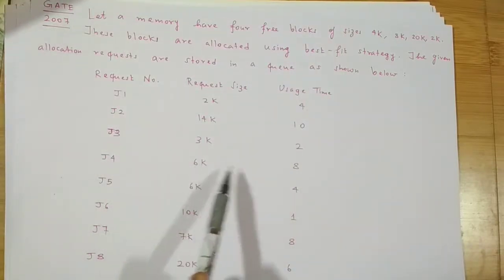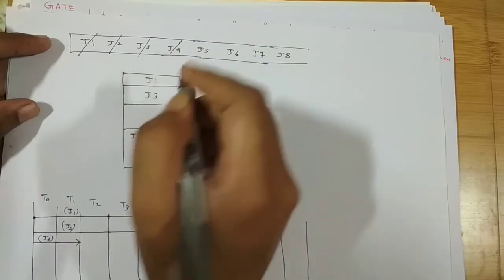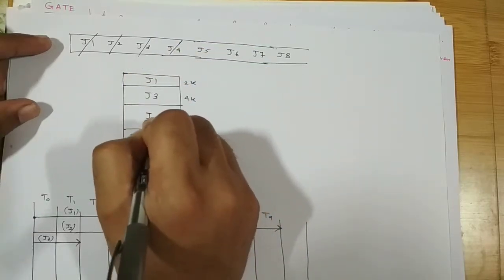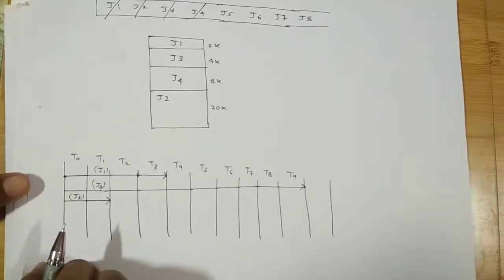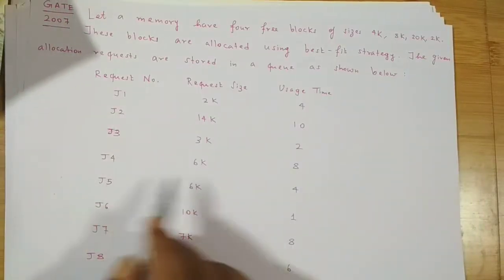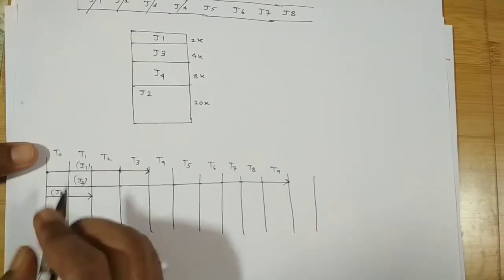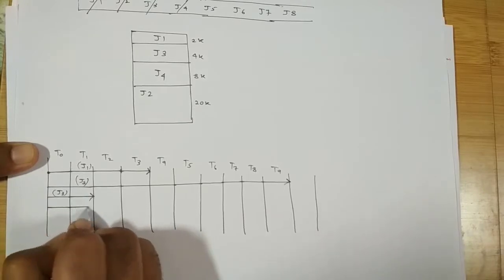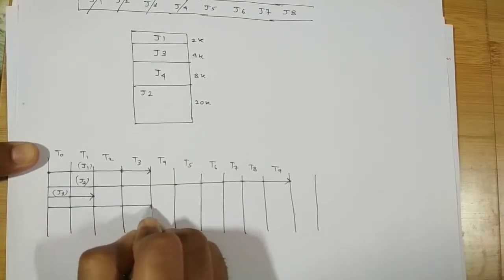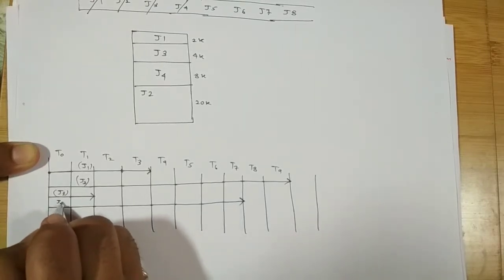J4 has a requirement of 6K. The remaining free block is 8K, so J4 gets the 8K block. J4 runs for 8 units of time. At this point, all four blocks are occupied.